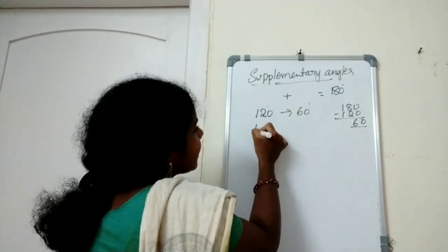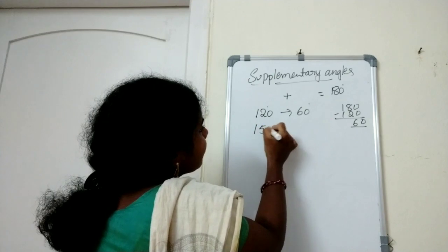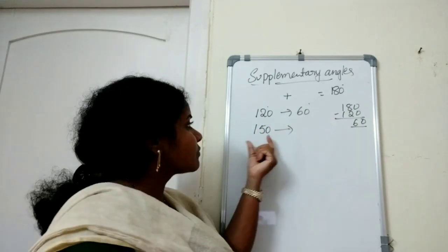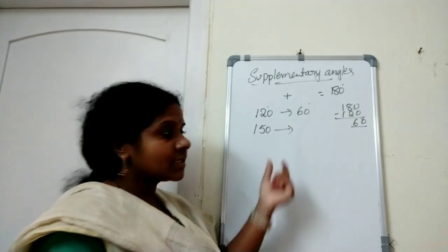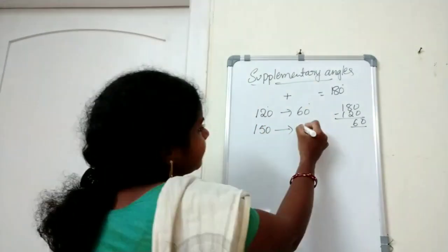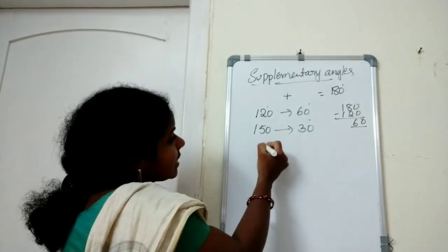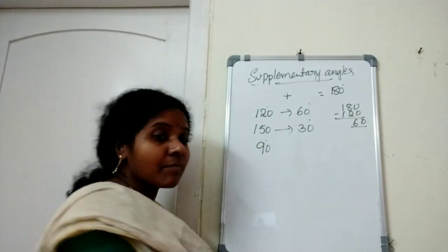What is the supplementary angle of 150 degrees? 180 minus 150 is 30 degrees. What is the supplementary angle of 90 degrees?